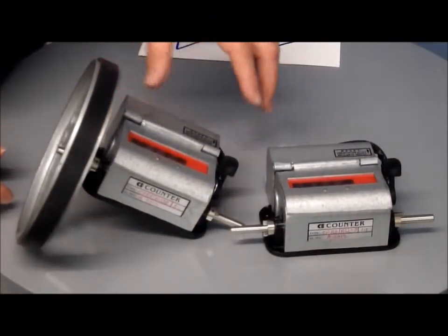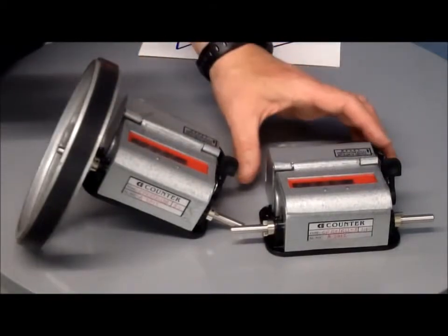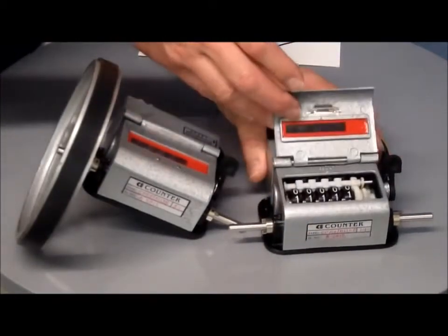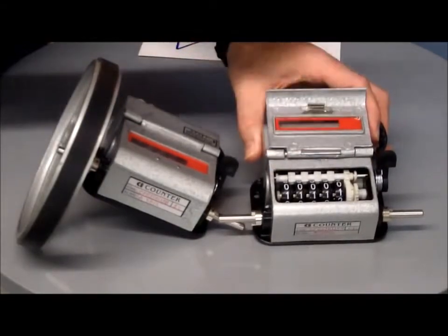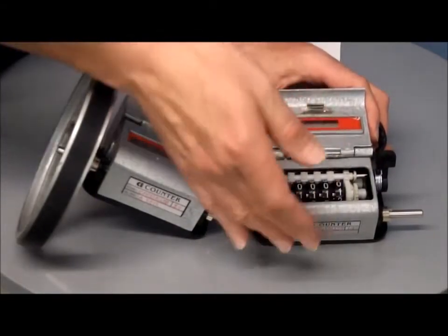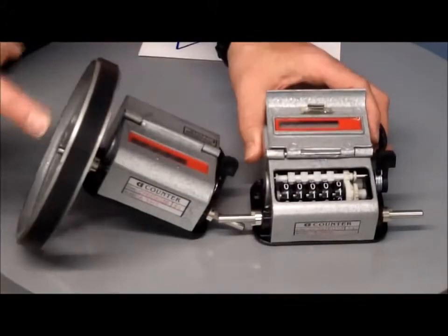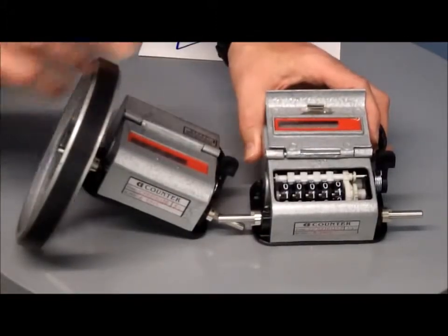The CMP5 counters are what's called a mechanical preset, where they have underneath this cover, you have your digits here, and you would set each digit to your preset count, whether it's a revolution count on this model, or a length measurement on this model here with the wheel on.